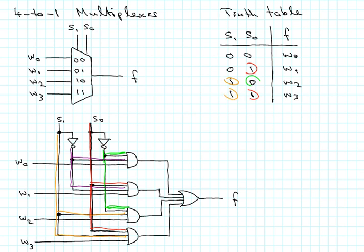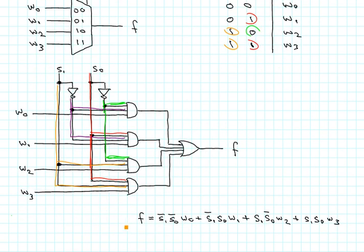The logic expression for the output here, F is equal to S1 not S0 not times w0 and then plus S1 not S0 times w1 plus S1 S0 not times w2 plus S1 S0 times w3.